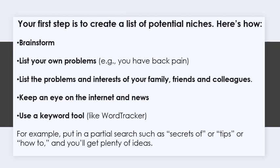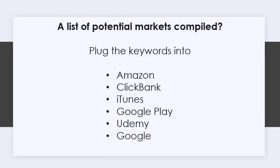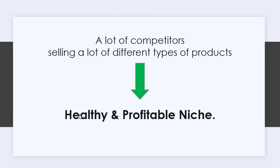You'll get plenty of ideas. Once you've compiled your list of potential markets, plug the keywords into Amazon, ClickBank, iTunes, Google Play, Udemy, and Google to determine if this is a profitable market. If you see a lot of competitors selling a lot of different types of products, that's a good sign of a healthy, profitable niche.